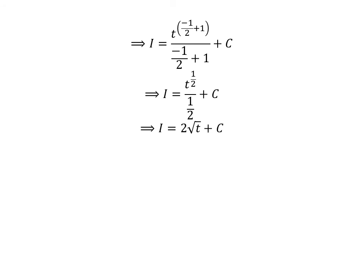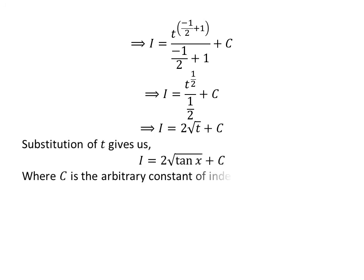Further simplification gives us i is equal to 2 times square root of t plus capital C. Substituting t back in terms of x, since we had assumed t is equal to tangent of x, i is equal to 2 times square root of tangent of x plus capital C.